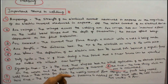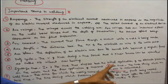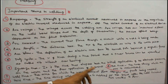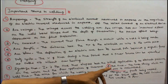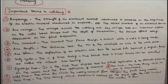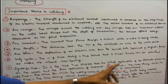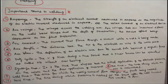Arc time: the time during which an arc is maintained. Weld time: the time for which the welding current flows through the parts being welded. Hold time: the time during which pressure is applied at the point after the weld current has ceased to flow.